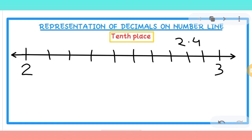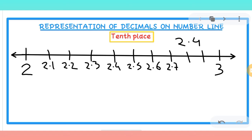The 10th division is already your 3. Now the divisions are labeled as 2.1, 2.2, 2.3, 2.4, 2.5, 2.6, 2.7, 2.8, 2.9, and the last is 3. We don't write 2.10 because 2.10 is exactly 3. So 2.4 is represented at the 4th division after 2.